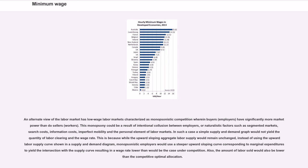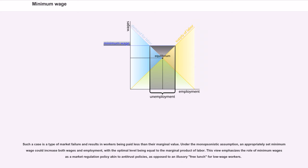An alternate view of the labor market characterizes low-wage labor markets as monopsonistic competition wherein buyers — employers — have significantly more market power than do sellers — workers. This monopsony could be a result of intentional collusion between employers, or naturalistic factors such as segmented markets, search costs, information costs, imperfect mobility, and the personal element of labor markets. In such a case, a simple supply and demand graph would not yield the quantity of labor clearing and the wage rate, because monopsonistic employers would use a steeper upward-sloping curve corresponding to marginal expenditure, resulting in a wage rate lower than would be the case under competition.